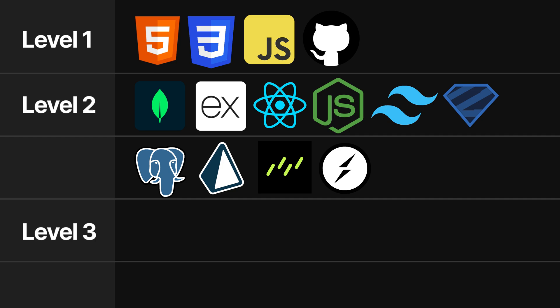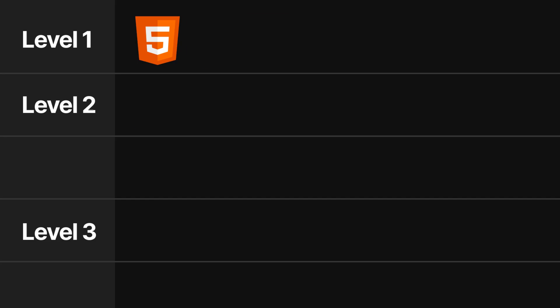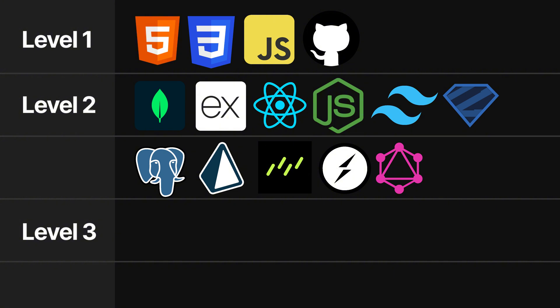Now we need to learn how to communicate between front-end and back-end. We use APIs. The most basic is the REST API — we send requests and receive responses. But we should also know different API methods. There are also WebSockets, which allow real-time communication between front-end and back-end. GraphQL is also required — knowing how to communicate between front-end and back-end is important.